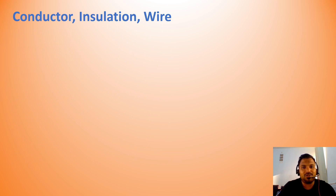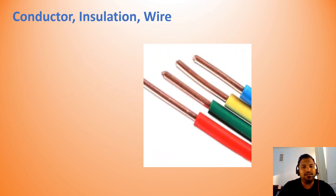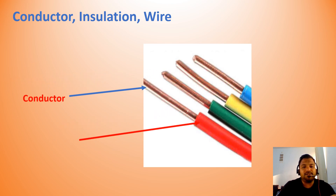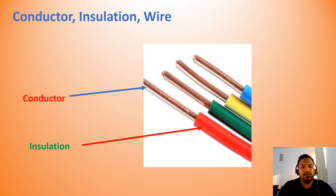First, we will learn about a few things: what is a conductor, what is insulation, and what is a wire? In this picture, you will see the insulation and conductor. The arrow indicates the conductor, and the surrounding material is called insulation. A conductor carries the current — current needs to transfer from one place to another, and conductors are used for that purpose.